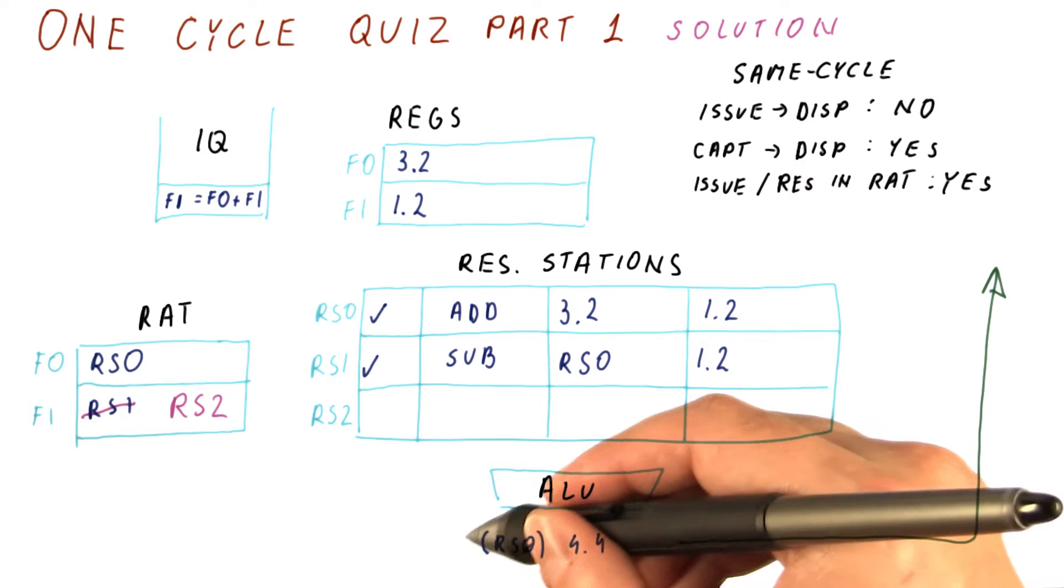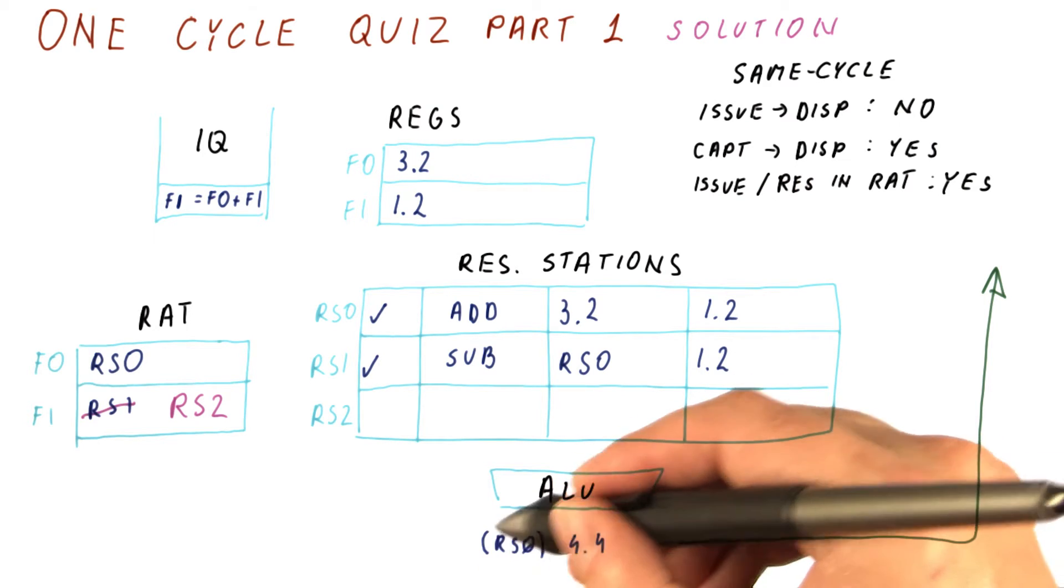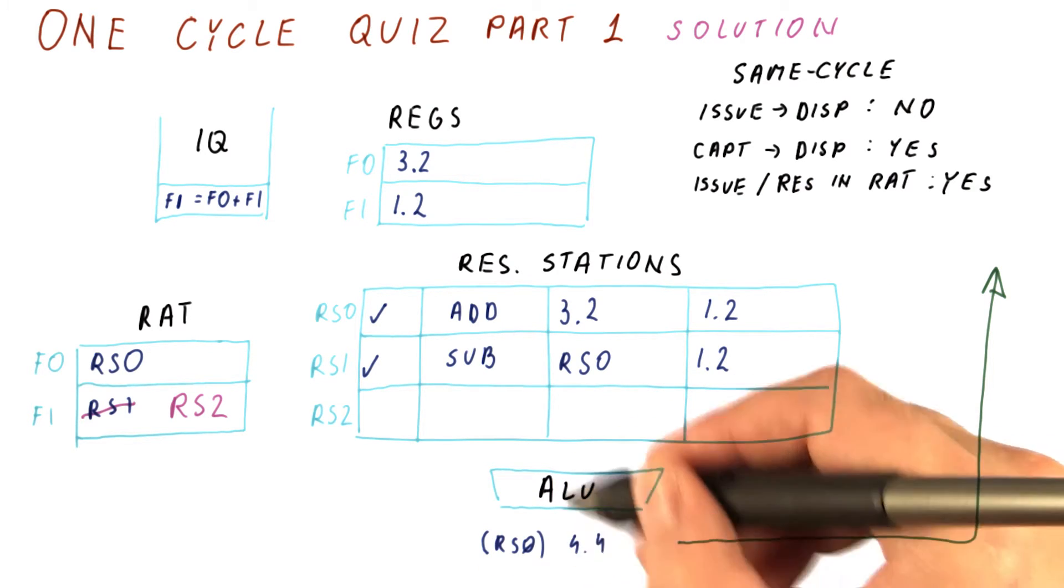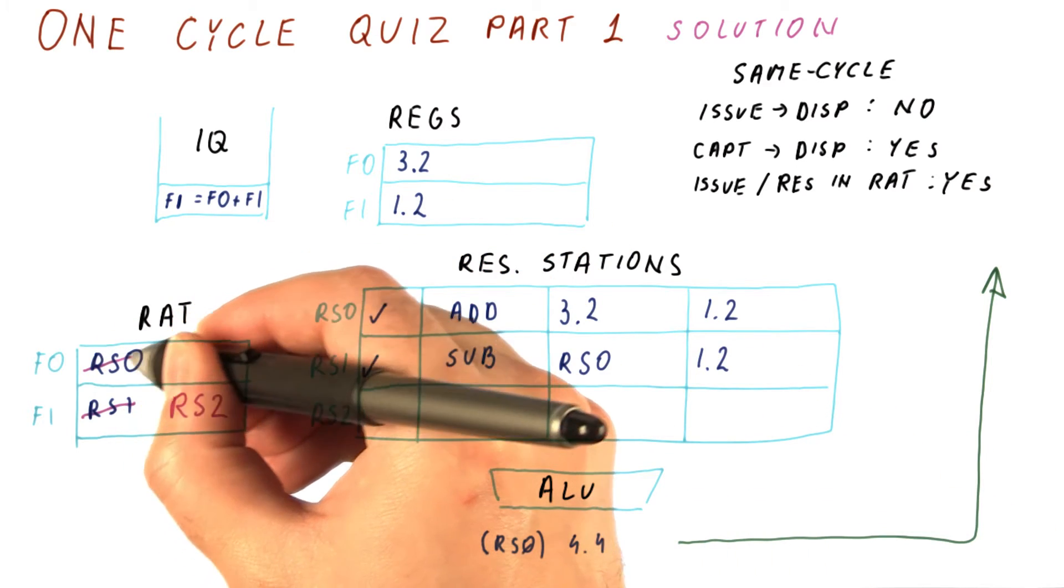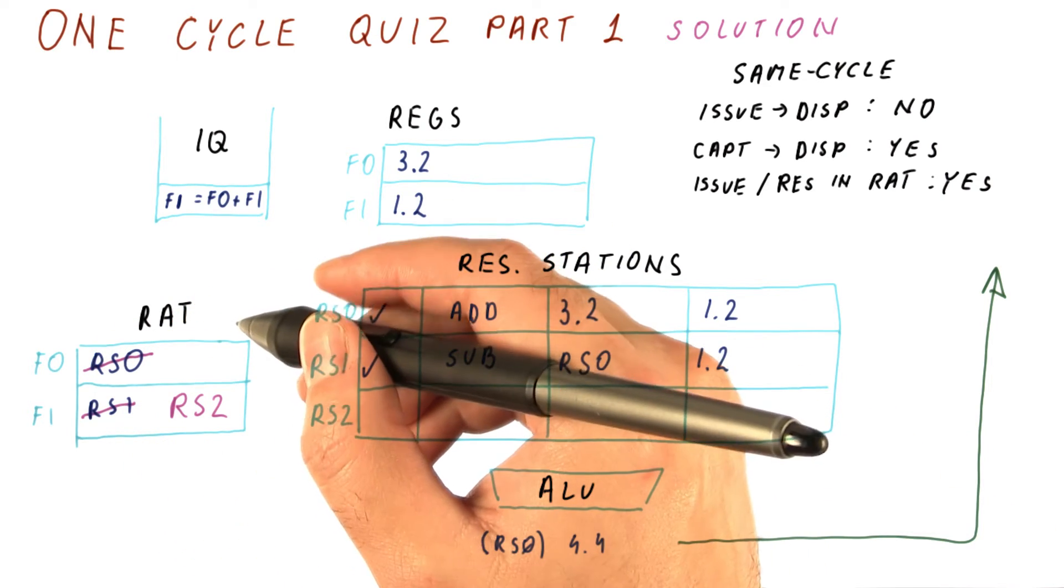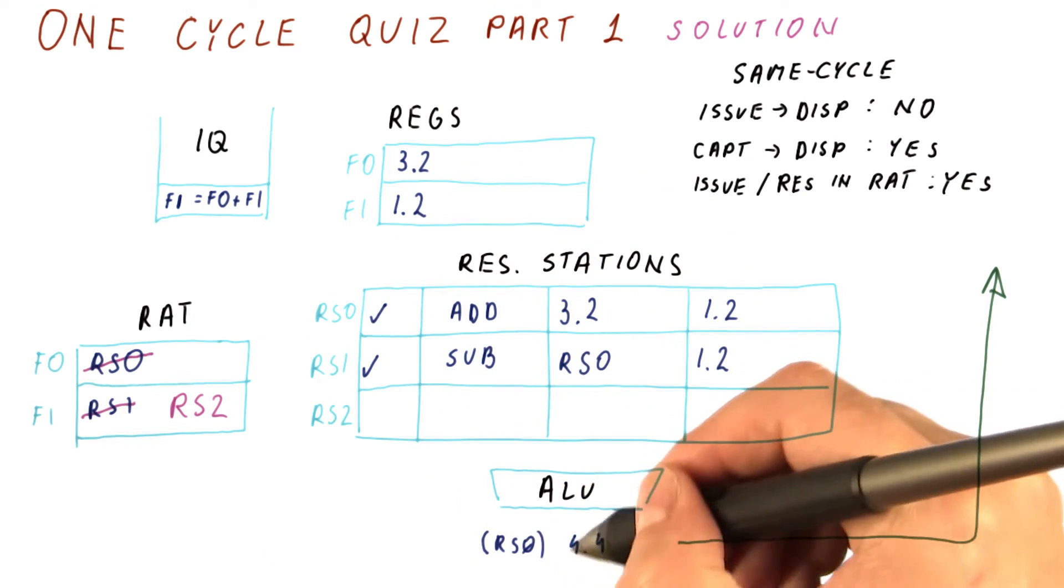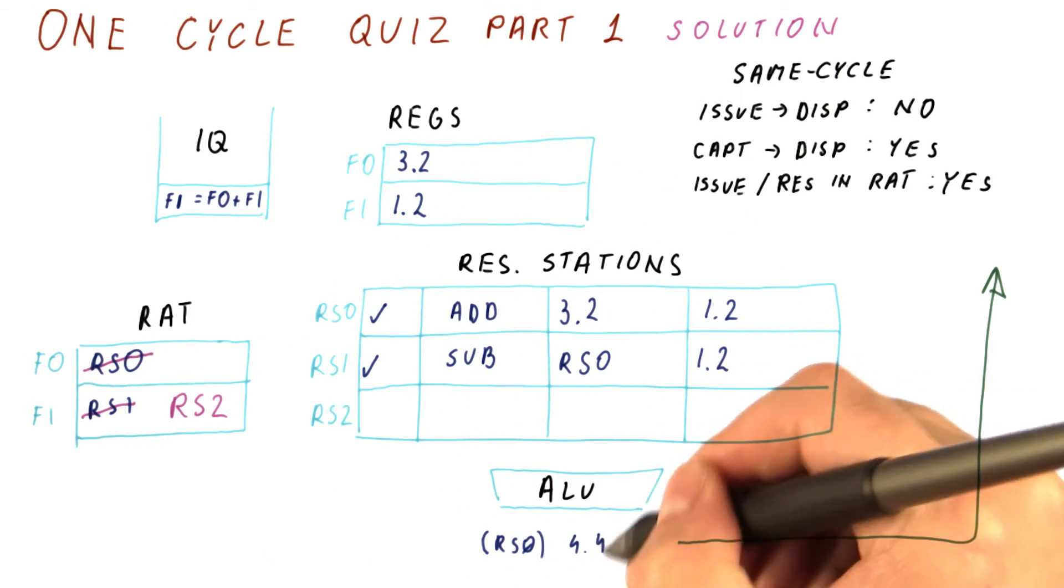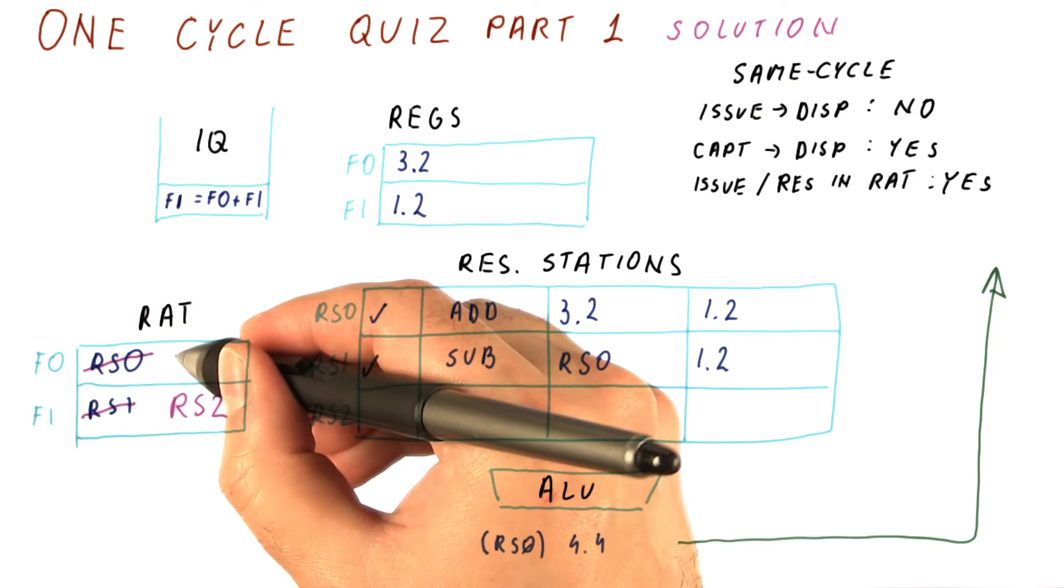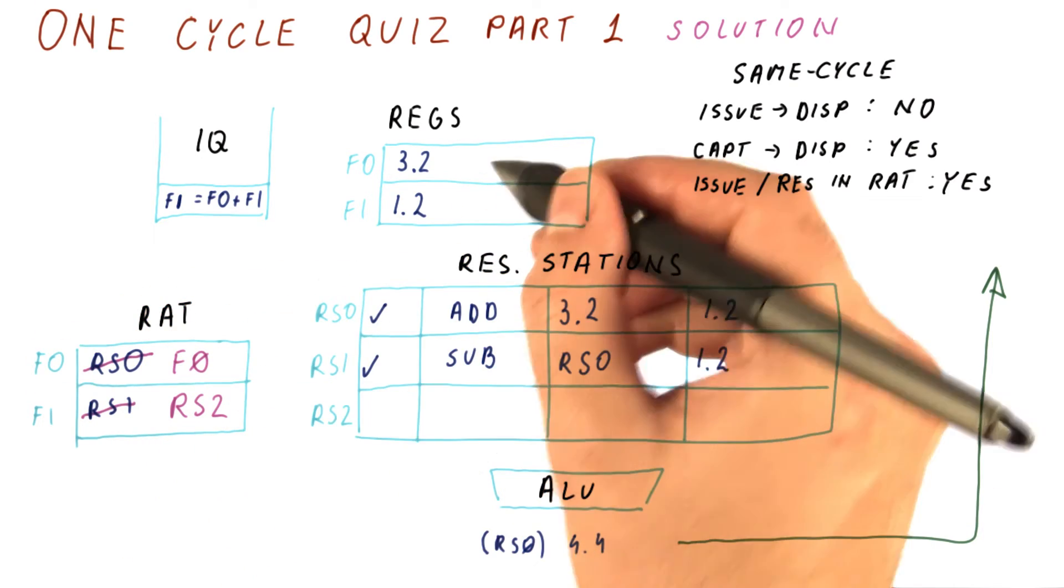So from now on, we will not be using RS0 as the name for this value. That means that this RAT entry will from now on be pointing to the actual register where we write this result, and that register is F0. So this RAT entry from now on points to the register file.